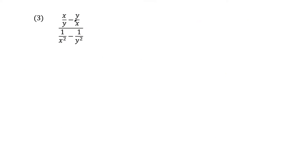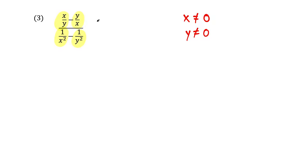Question three is a little more complicated because now we have x's and y's. Right away, I can see that x cannot equal zero, and y cannot equal zero, because that would give us division by zero within these fractions. We have fractions in the numerator and denominator. The least common denominator of those four fractions is going to be x squared y squared. So we're going to multiply by x squared y squared.